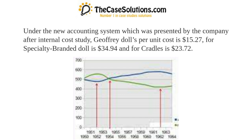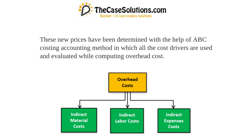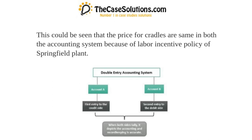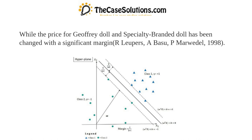Under the new accounting system presented after an internal cost study, the Jeffrey doll's per unit cost is $15.27, specialty branded doll is $34.94, and cradles is $23.72. These new prices were determined using the ABC costing method, in which all cost drivers are evaluated while computing overhead cost. The price for cradles is similar under both systems due to the labor-intensive policy of the Springfield plant, while prices for Jeffrey doll and specialty branded doll changed significantly.